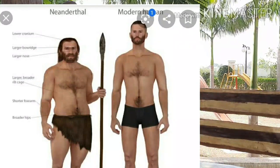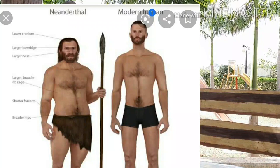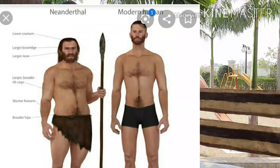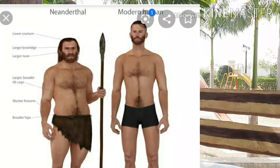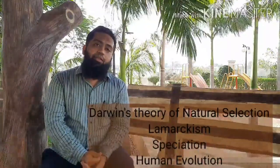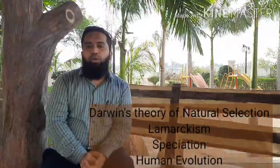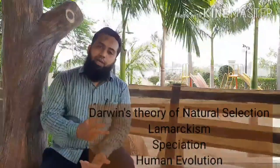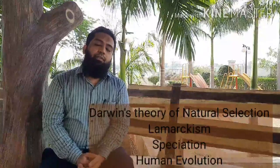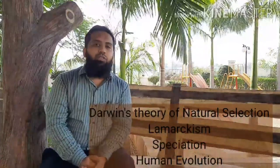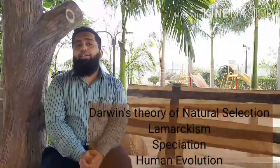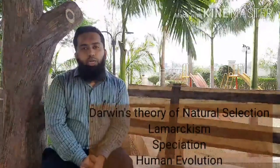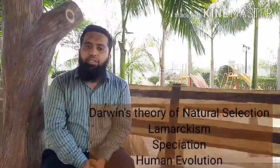And now we have reached at this stage, and still we are searching for the details of the roots of human ancestry. In today's video lecture we have finished the four topics of this chapter: Darwin's theory of natural selection, Lamarckism, speciation, and human evolution. So here we have finished with this chapter called Heredity and Evolution. In the next session, inshallah, we will discuss the further chapter — the second chapter of Science 2. All the best. Assalamu alaikum wa rahmatullahi wa barakatuh.